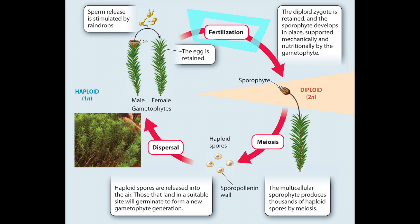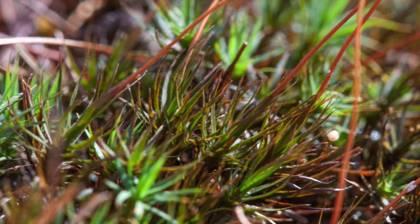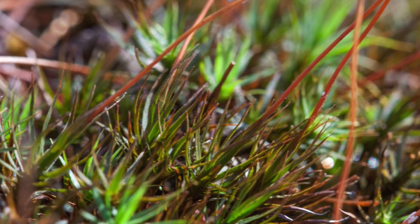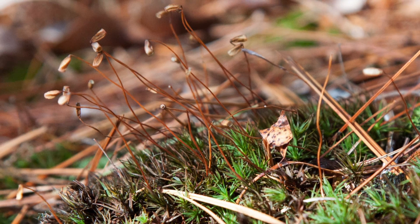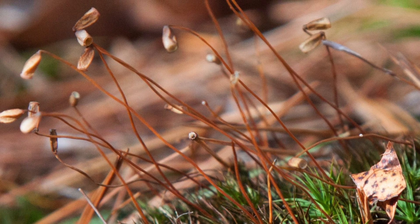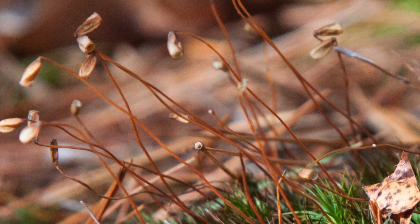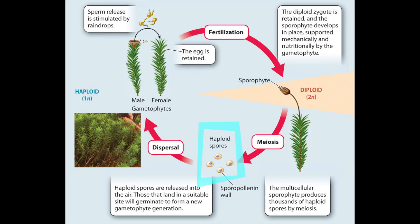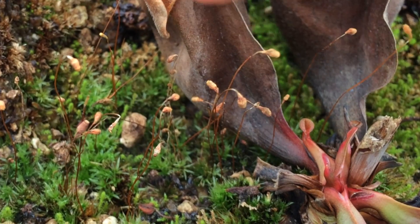Fertilization occurs at the top of the female gametophyte, and out of that grows the diploid sporophyte. This sporophyte is brown and non-photosynthetic. Its job is to grow just a bit higher than the gametophyte, which needs to stay low to the ground so it doesn't dry out. It grows up and releases haploid spores that will hopefully find somewhere to land and grow into a new gametophyte generation, starting this whole process over again.